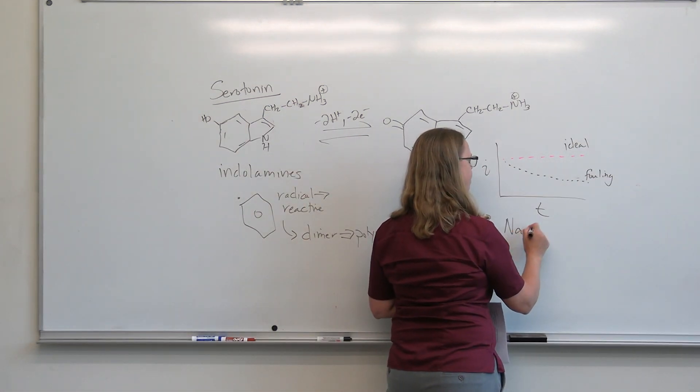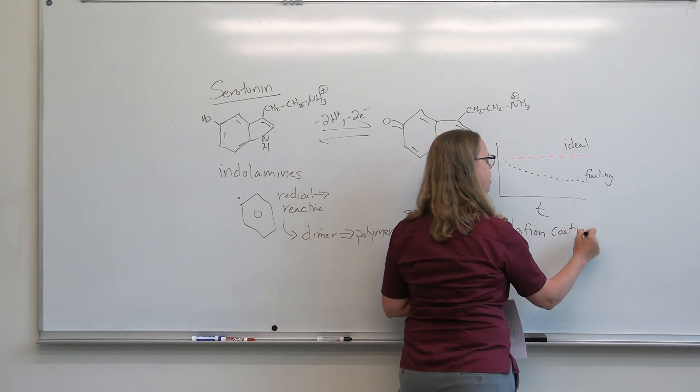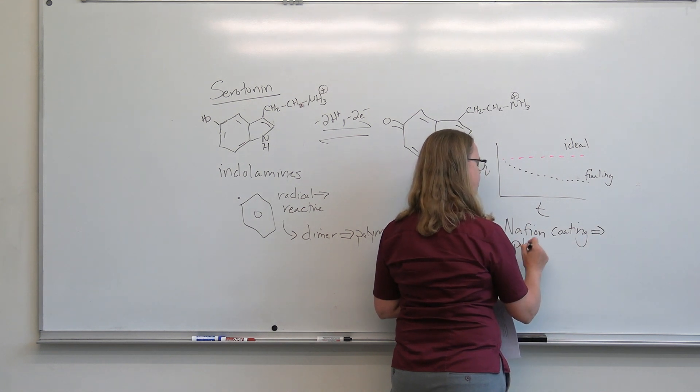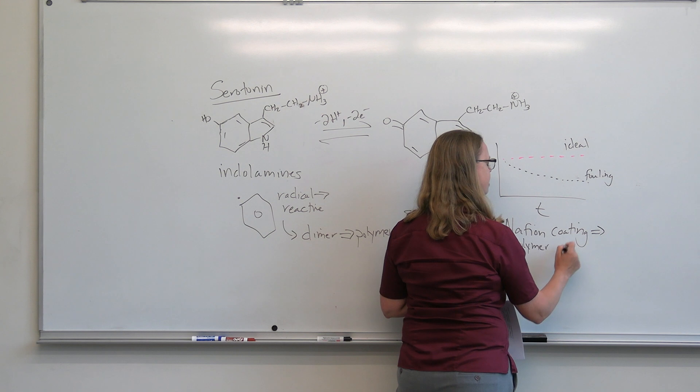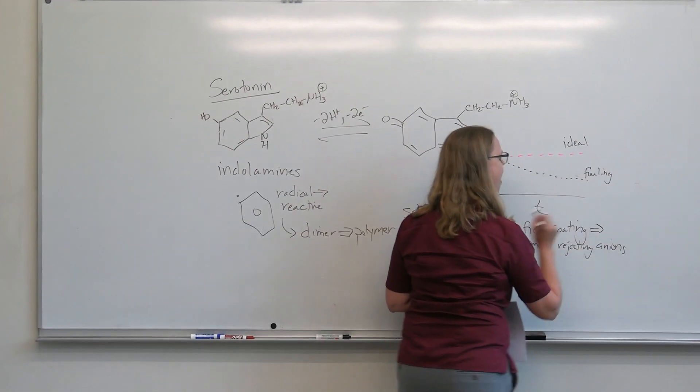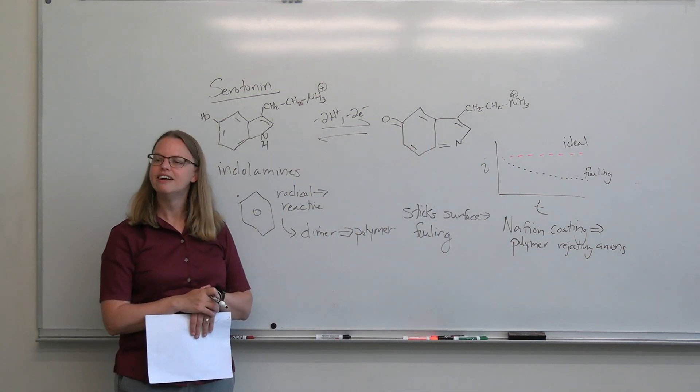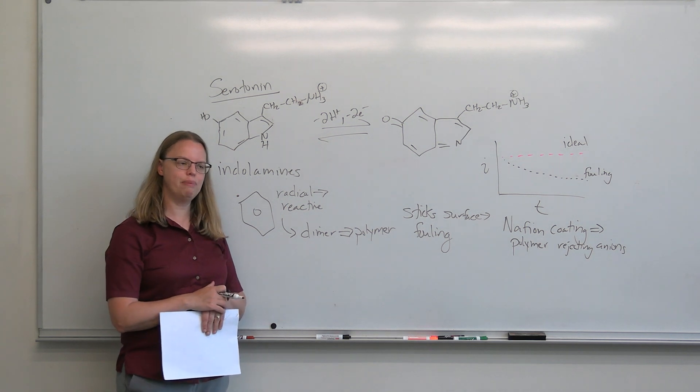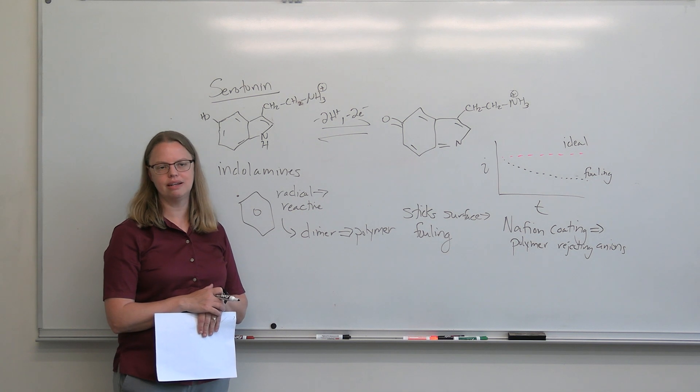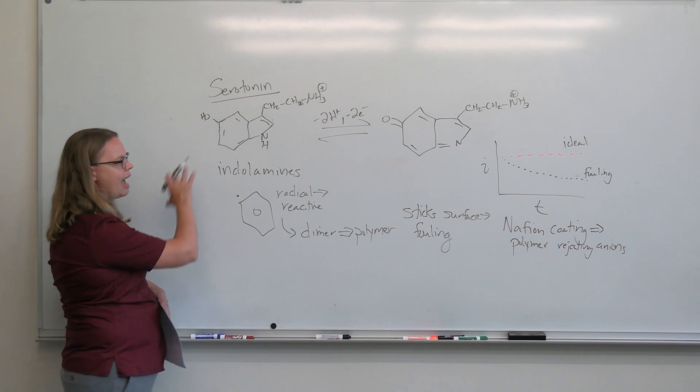And so people have known this for a while. So how do people deal with this fouling? The typical way that people have dealt with the fouling is to put on a Nafion coating. And so Nafion is a perfluorinated polymer, and it's really good at kind of rejecting particularly anions. But also, again, once you have a polymer on the surface, it's just hard to form another polymer on the surface. And so, again, people tend to need to Nafion coat for serotonin to get rid of this.